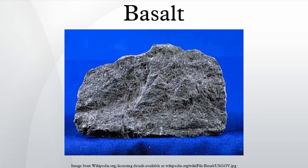In tholeiitic basalt, pyroxene and calcium-rich plagioclase are common phenocryst minerals. Olivine may also be a phenocryst, and when present, may have rims of pigeonite. The groundmass contains interstitial quartz, tridymite, or cristobalite. Olivine tholeiite has augite and orthopyroxene or pigeonite with abundant olivine, but olivine may have rims of pyroxene and is unlikely to be present in the groundmass.